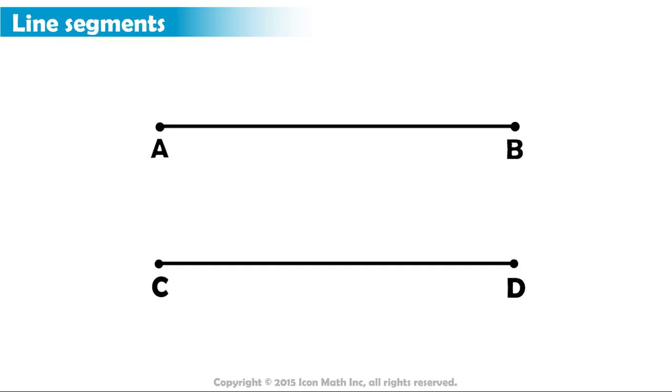To distinguish between the two line segments, we give them names based on their end points. So we can call the first one AB. This is read as line segment AB.